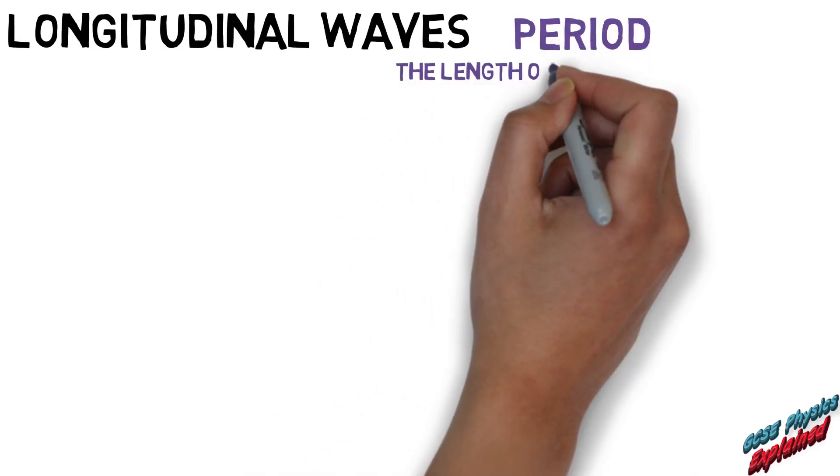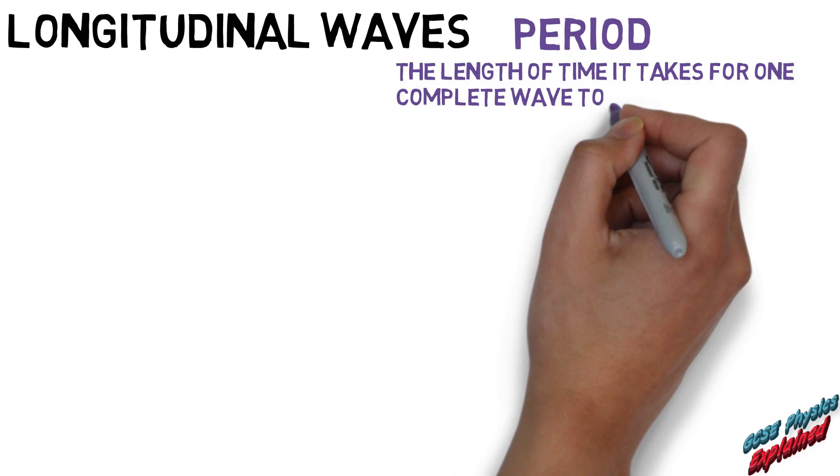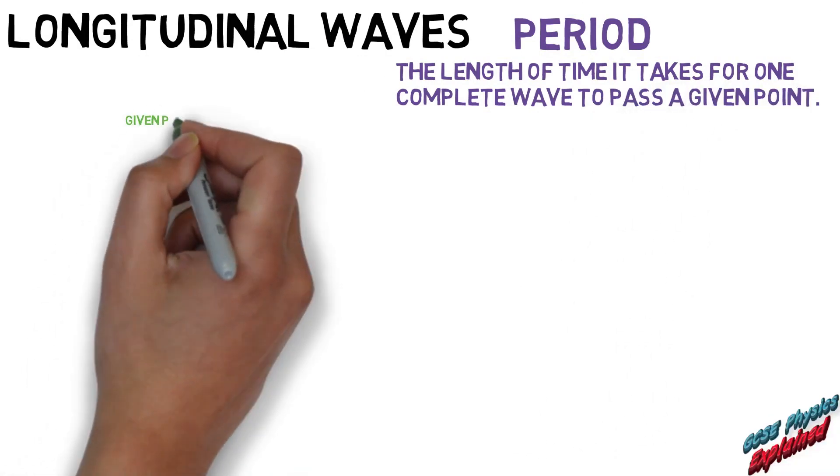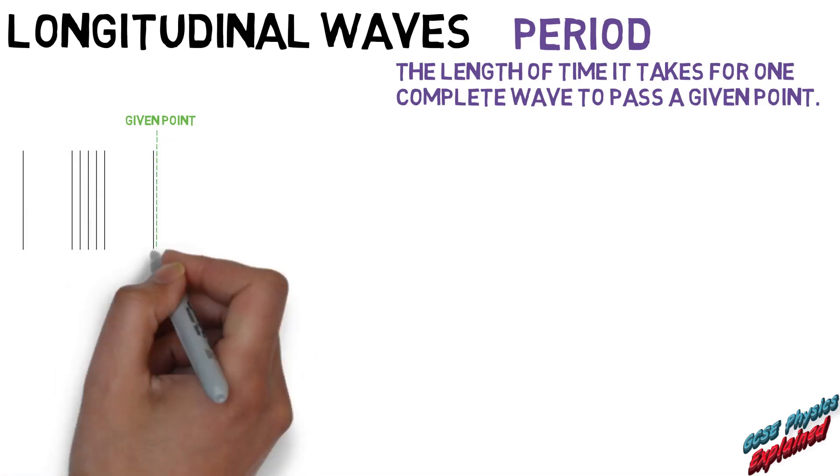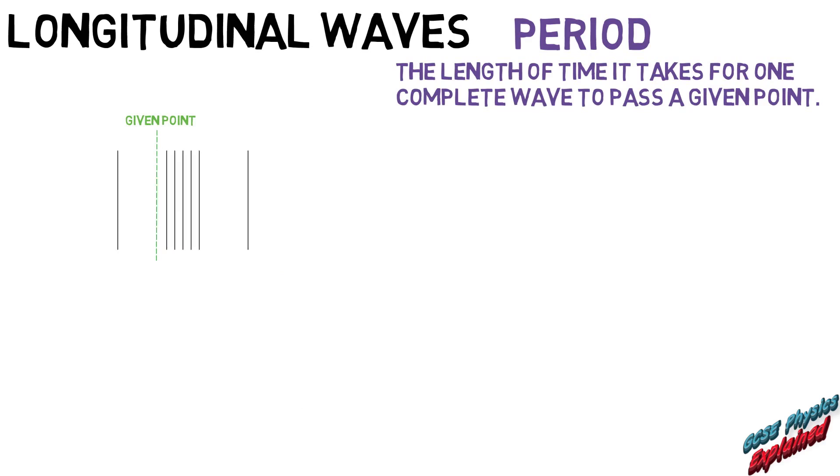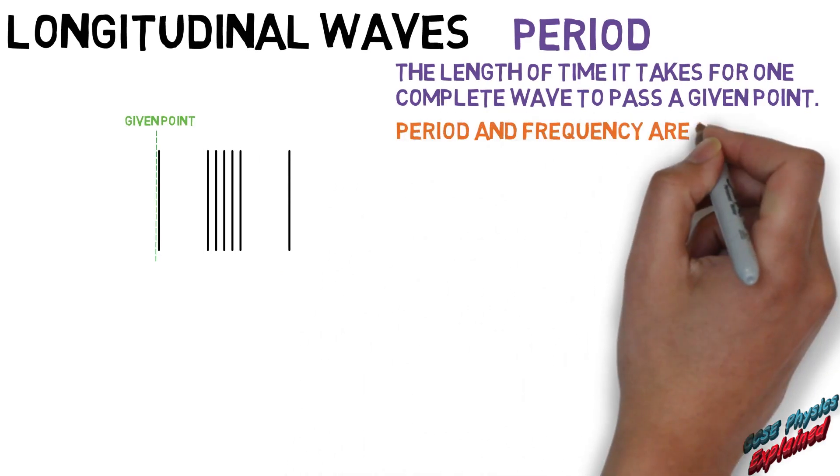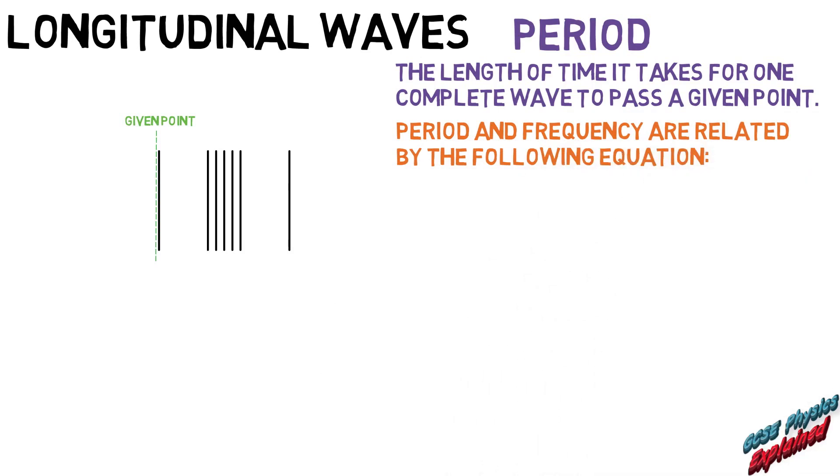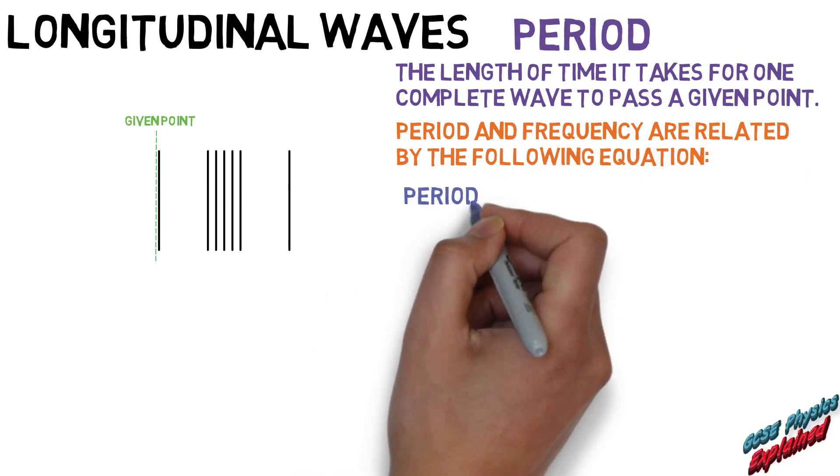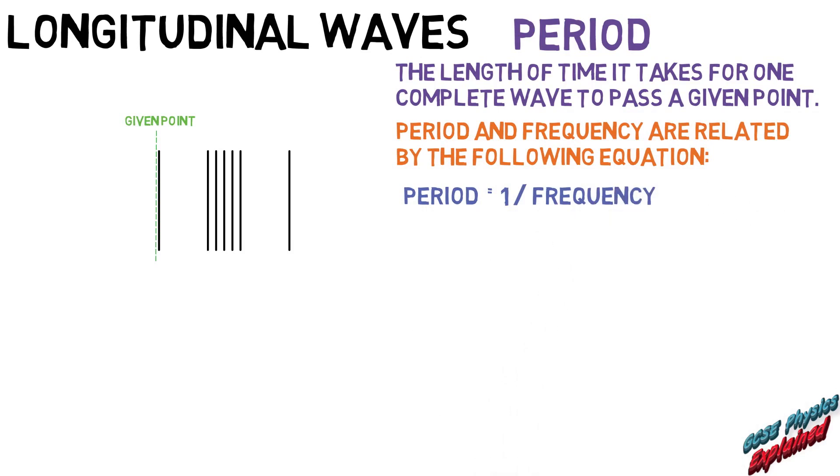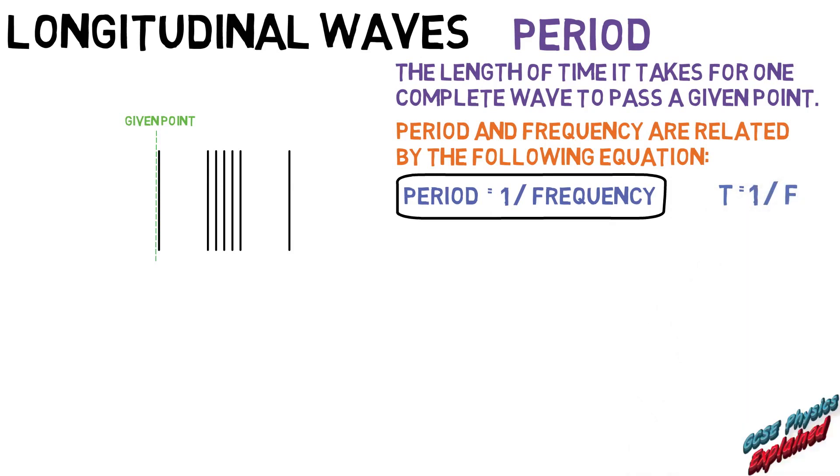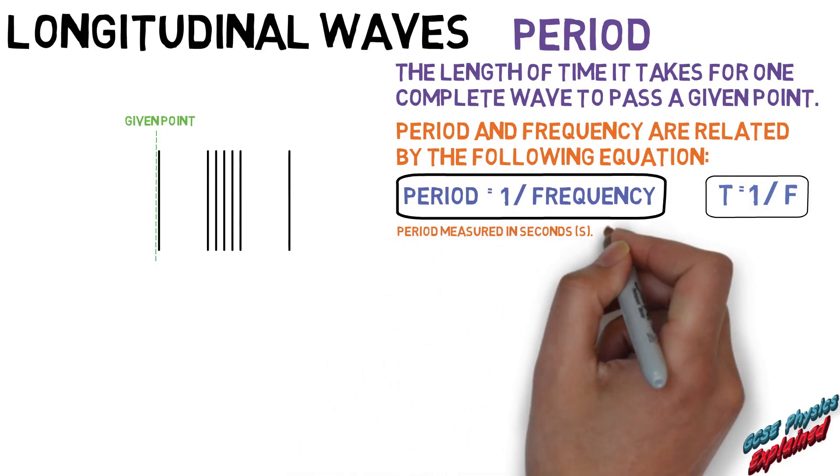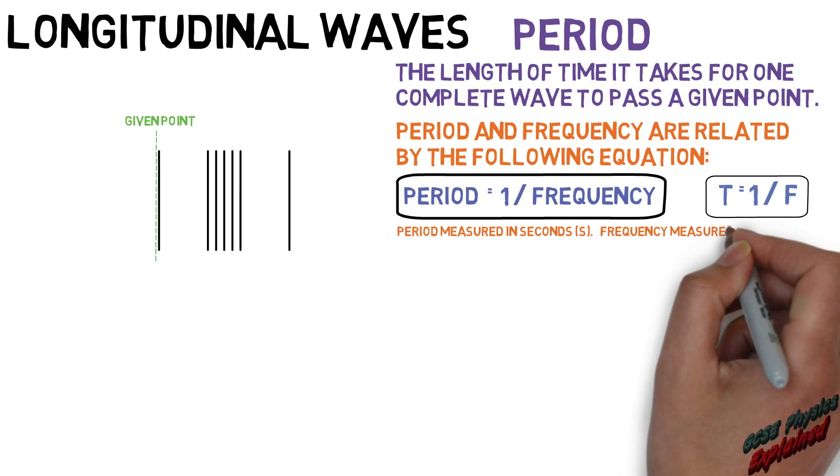Period is the length of time it takes for one complete wave to pass a given point. Period and frequency are related by the following equation: period equals one divided by frequency. T equals one divided by f. Period is measured in seconds, s. Frequency is measured in hertz, hz.